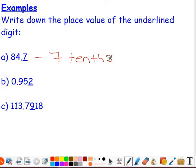Example B then, 0.952. This time, the 2 is the third digit after the decimal point, so we know that that is our thousandths column. So we've got two thousandths.